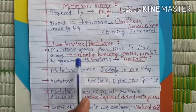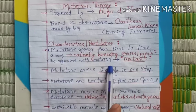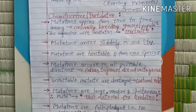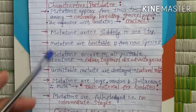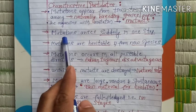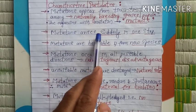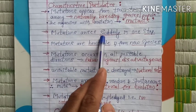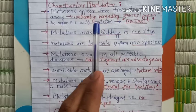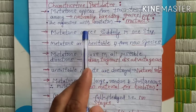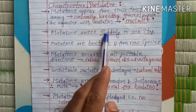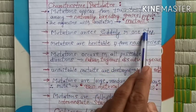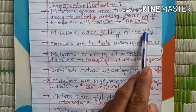The second important postulate is that mutations arise suddenly. De Vries states that mutations arise suddenly in only one step.